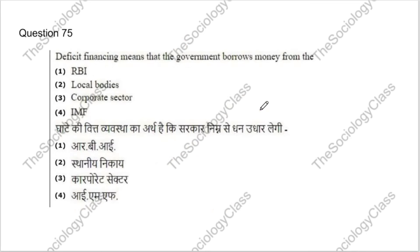Question 75: Deficit financing means what? Options: the government borrows money from the RBI, local bodies, corporate sector, or IMF. The correct answer is A — the government borrows from the RBI. That's all — we have solved all 75 questions of CUET PG Social Work MSW 2022 paper.